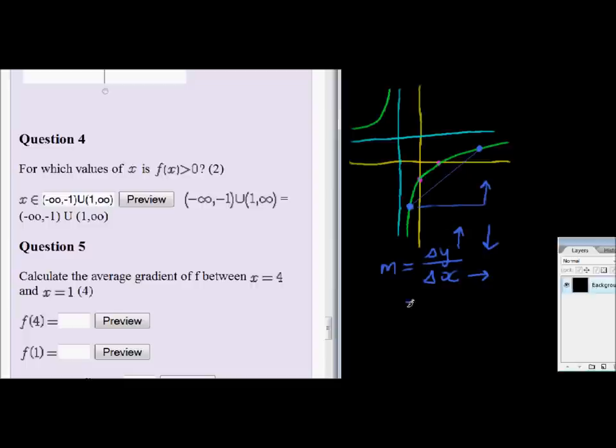A different way of calculating it is just y2 minus y1. That is the change of the y values. This y value will be y1 or y2, it doesn't matter, and that y value would be y2 or y1. And similarly, this will then be x1, and this value will be x2. So we're given the x values, so that would be x2 minus x1.